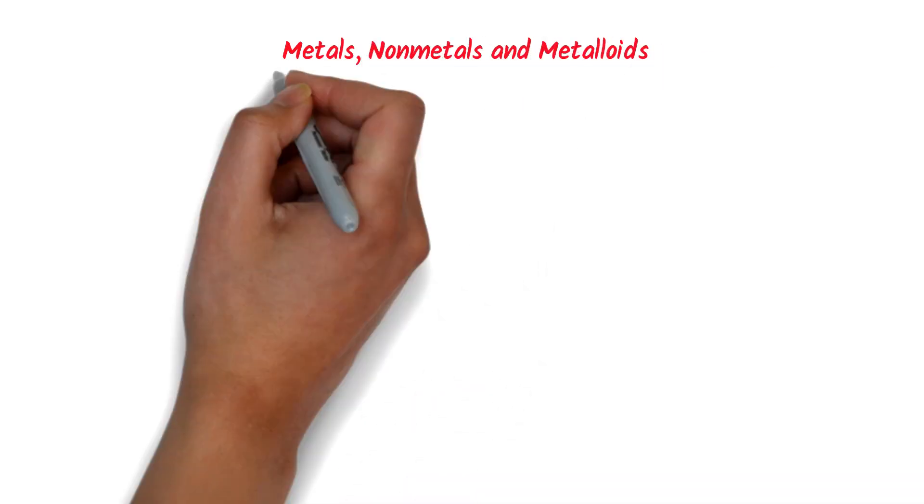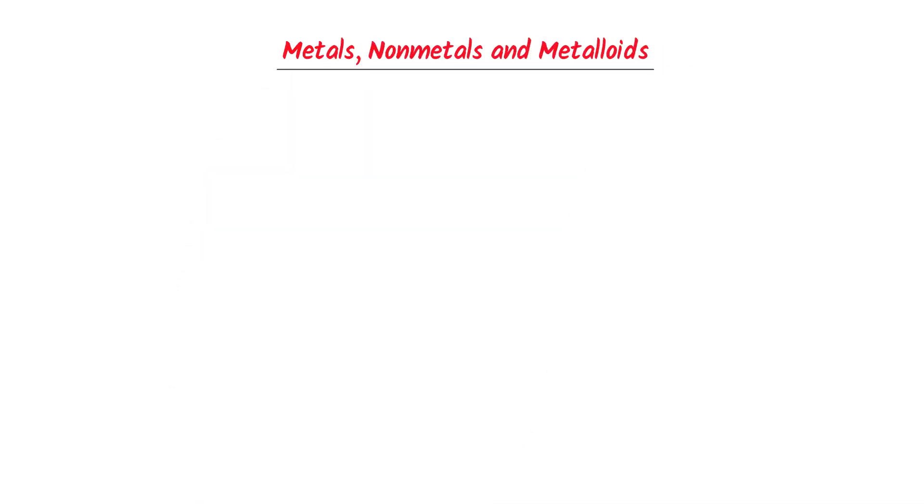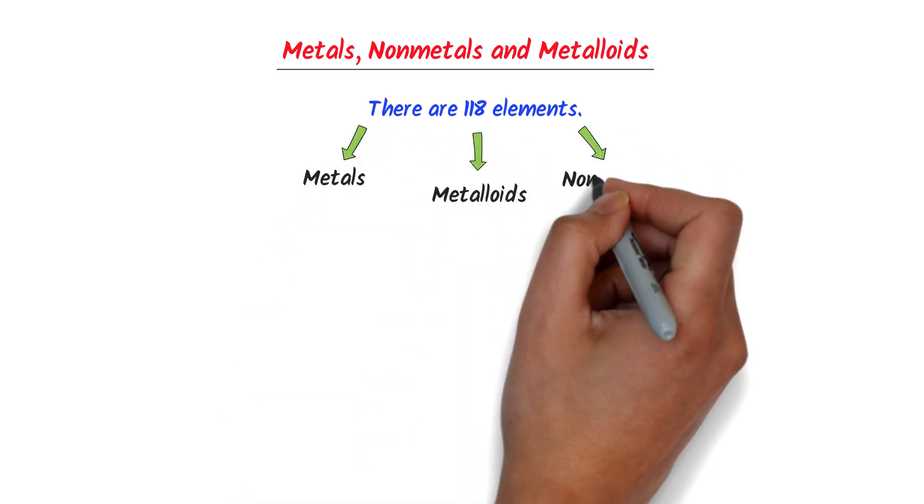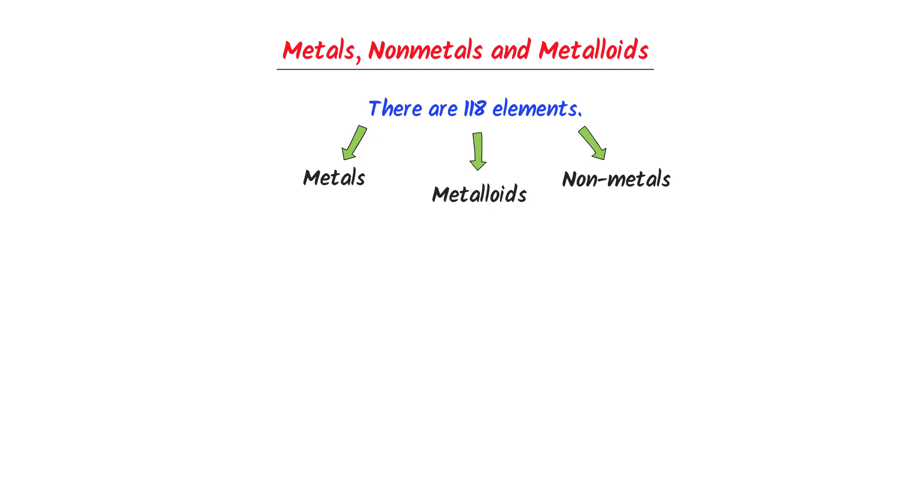Metals, nonmetals and metalloids. We know that there are 118 elements present in the universe. All these elements are classified into metals, metalloids and nonmetals. Out of these 118 elements, 92 elements are metals.